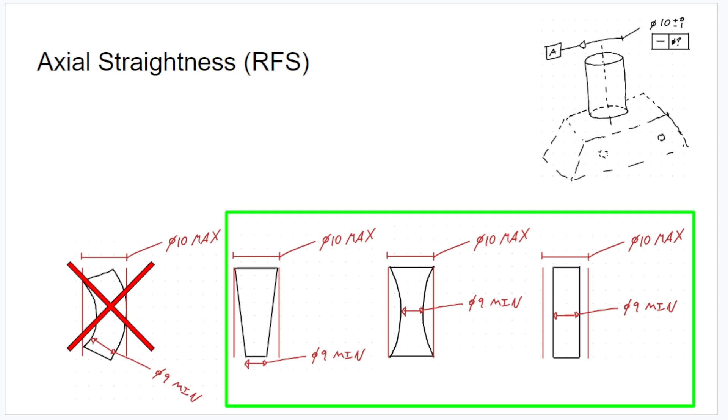Axial straightness is a little bit more restrictive. You might not be able to get this sort of bent pin, even if it does fit within the perfect form at MMC boundary. This might not be allowed with an axial straightness.